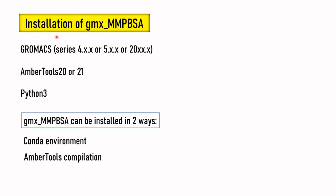For installation of GMX MMPBSA, GROMACS must already be installed in your system — either the 4.x, 5.x, or 2000x series. You also need AmberTools 20 or 21 and Python 3. These three software packages must already be present in your system before installing GMX MMPBSA. It can be installed in two ways: using the conda environment or using the AmberTools compilation.